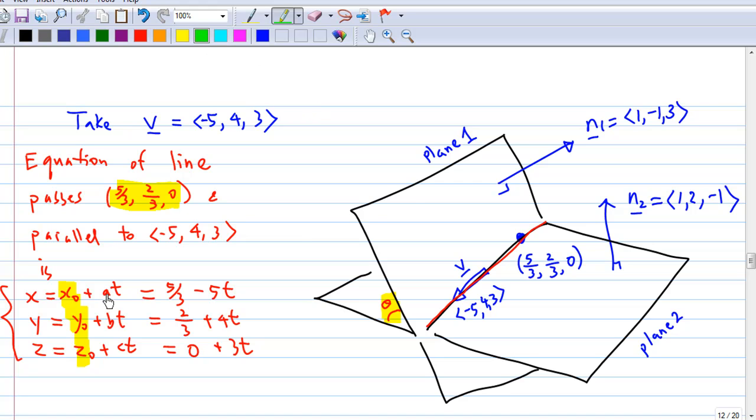And (a, b, c) is the direction of the line. That is why we get x equal to 5/3 minus 5t, y equal to 2/3 plus 4t, and z equal to 0 plus 3t.